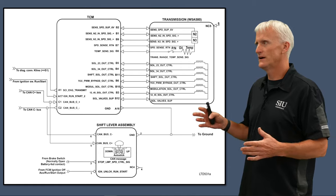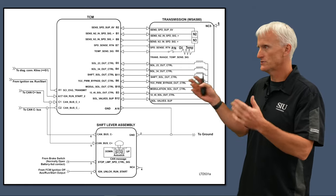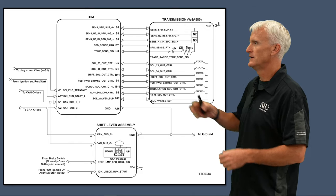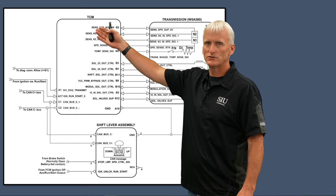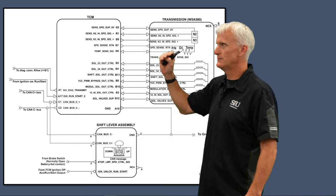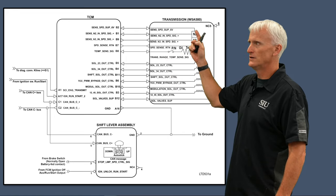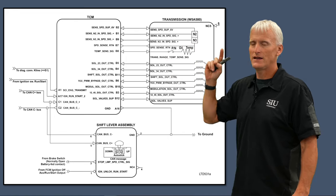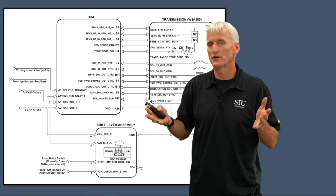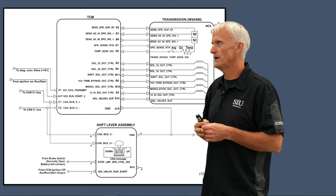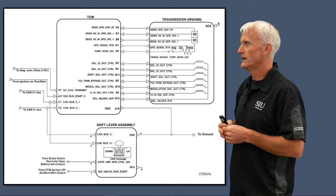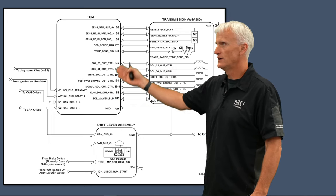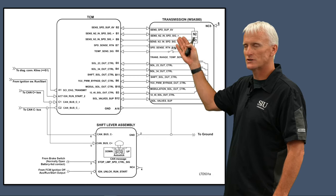Let's look at a simplified electrical schematic for one of these Chrysler vehicles — I believe off a 300C. Up top I've listed the transmission control module, TCM, and then the transmission, coded W5A580, which indicates it's the larger of the transmissions. There's also the W5A330. We have our various inputs and outputs listed here showing its connection to the transmission.